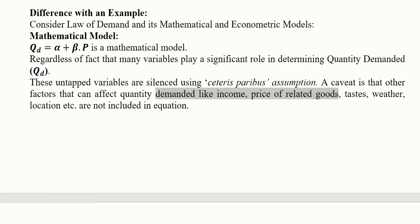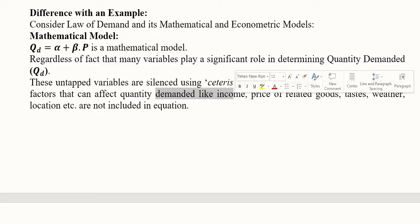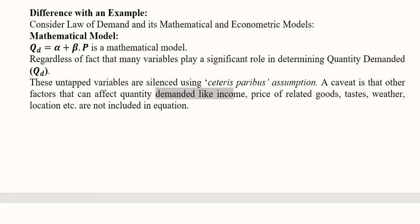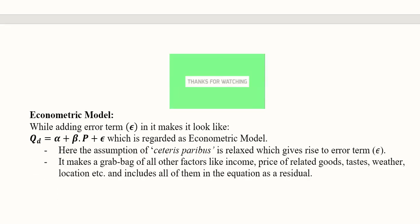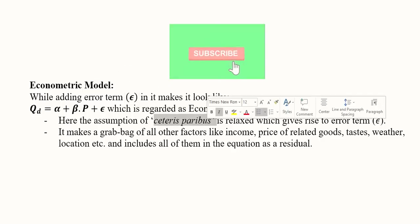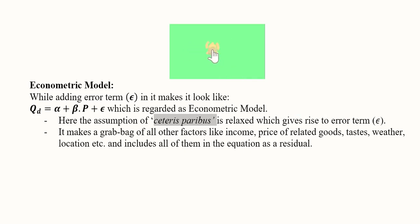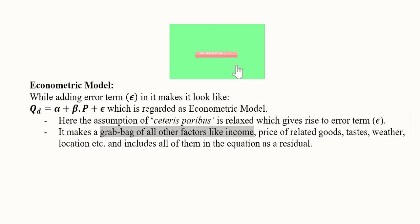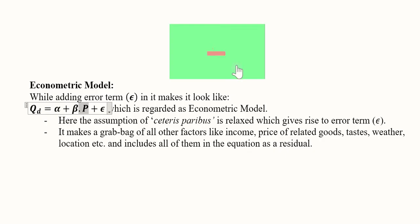The factors usually studied include income, prices of related goods such as complements and substitutes, tastes, weather, and location — all of which can affect quantity demanded. When we include these variables, we get the econometric model by bundling all those variables into an error term represented by epsilon. It contains the ceteris paribus elements and is also called the residual, because it represents what remains after price has explained quantity demanded.